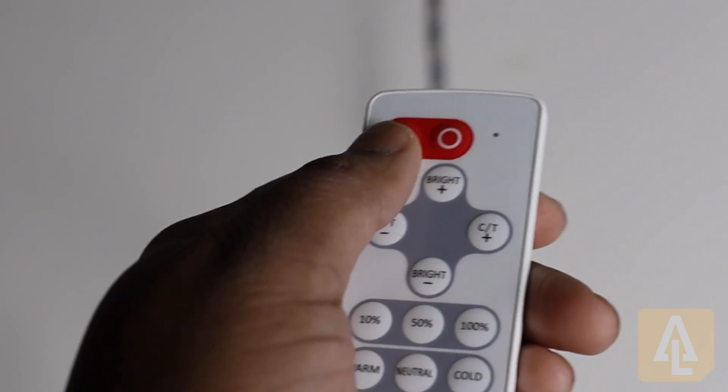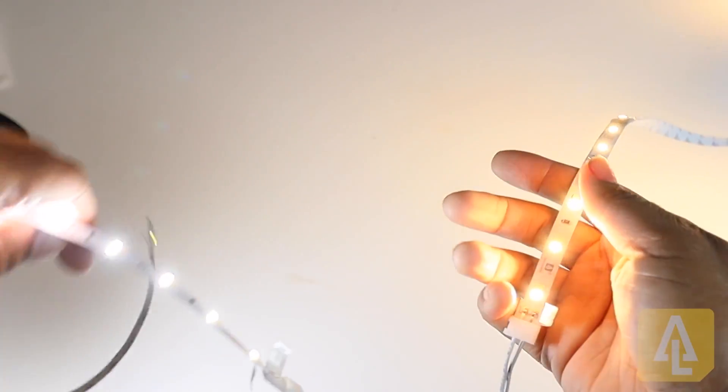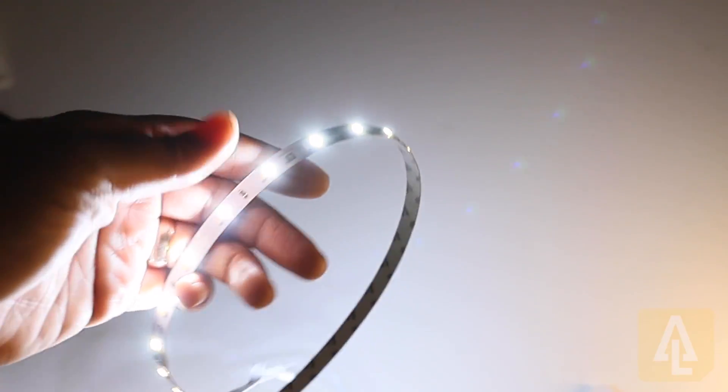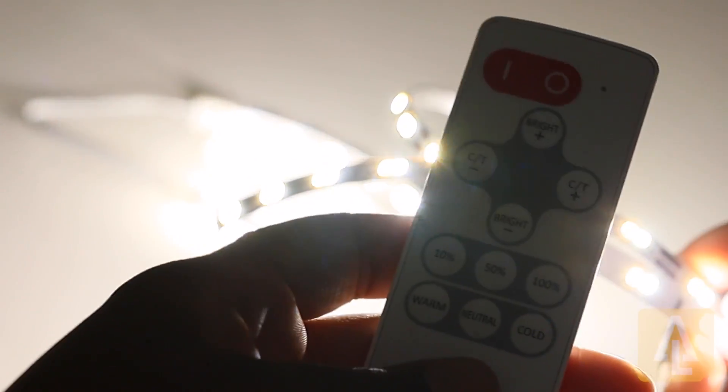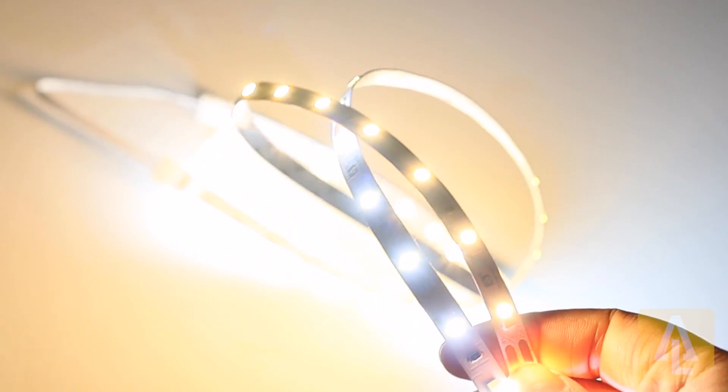Now I'm going to go ahead and turn my tape light on, and as we can see, I have one side which is very warm and the other side is very cool. I've turned the lights off just so you can get a better view of this. Using my remote control, no matter which color temperature I hit, it's always going to be unsynced.